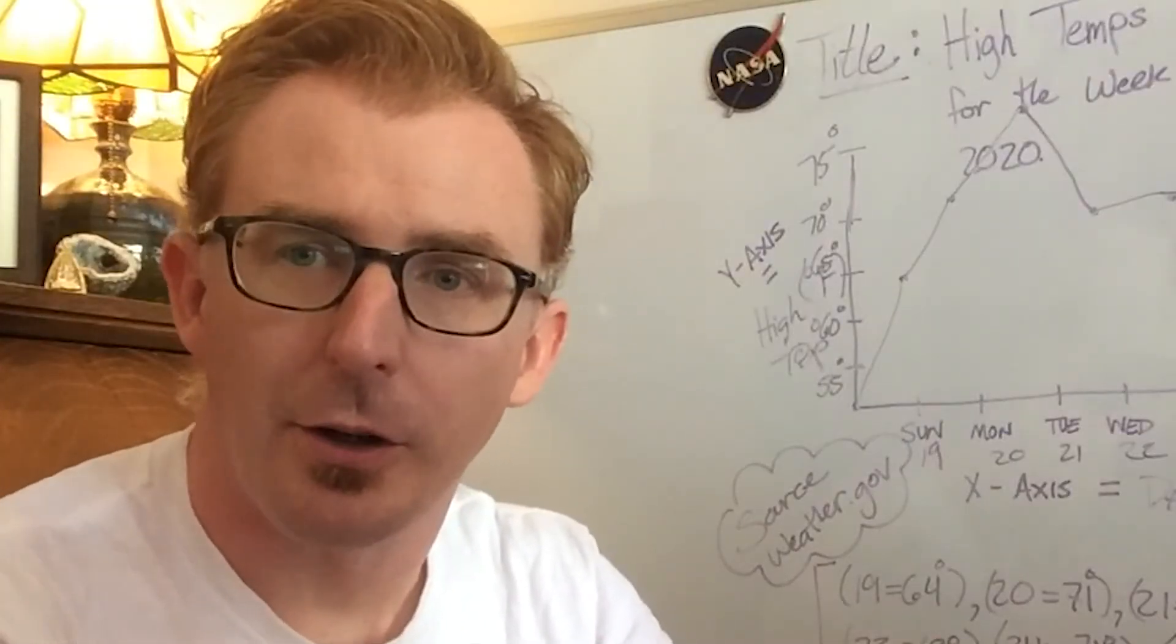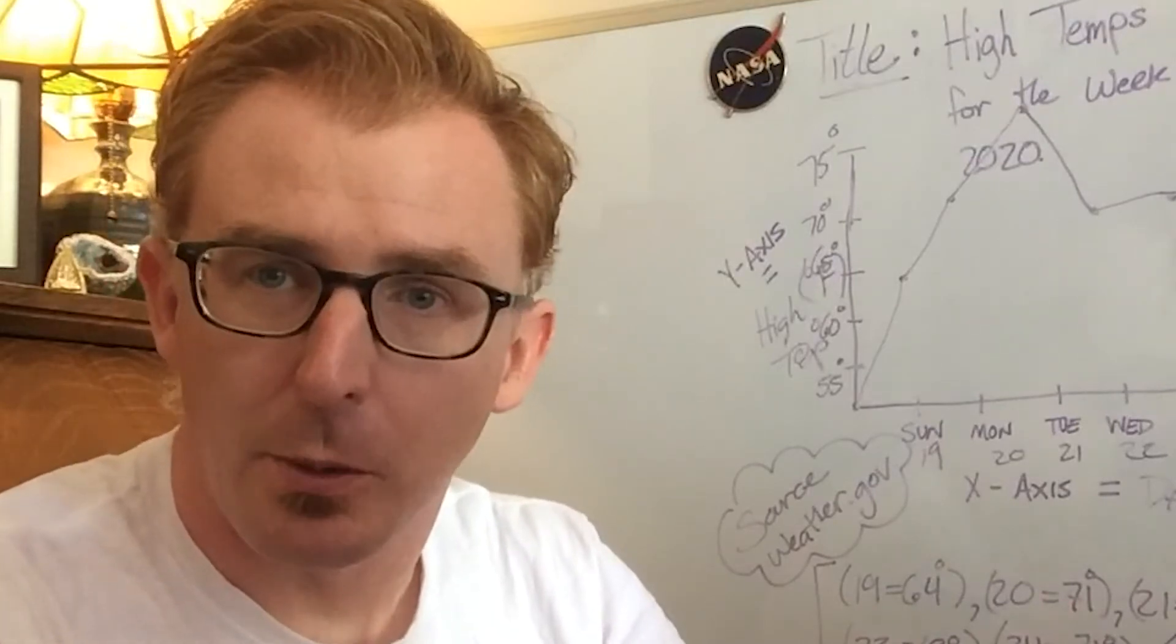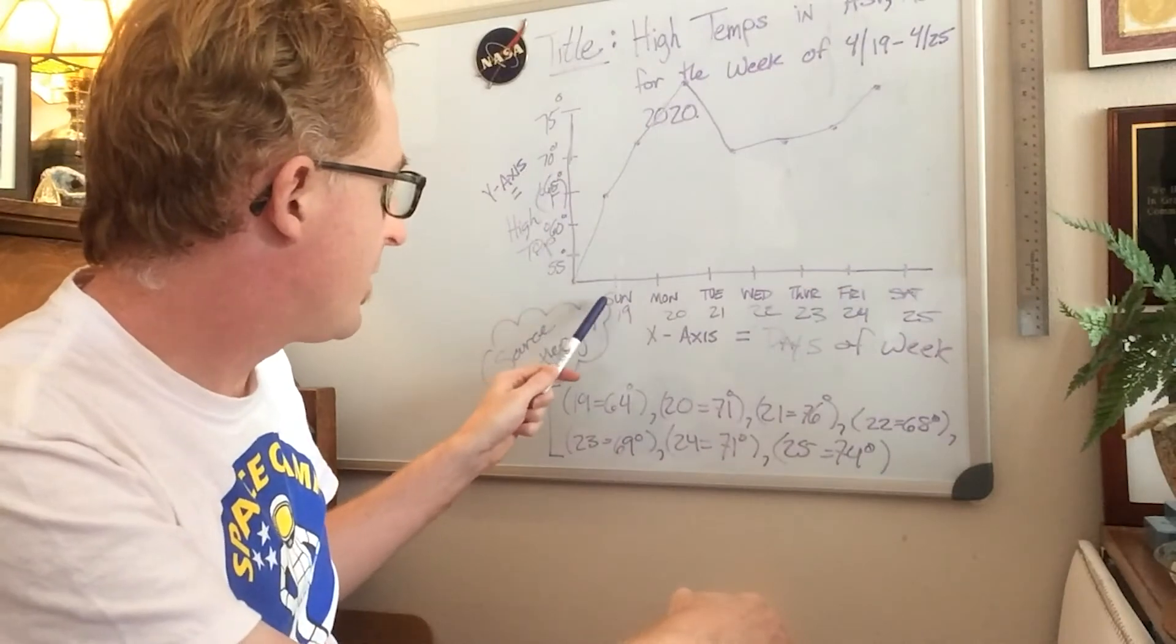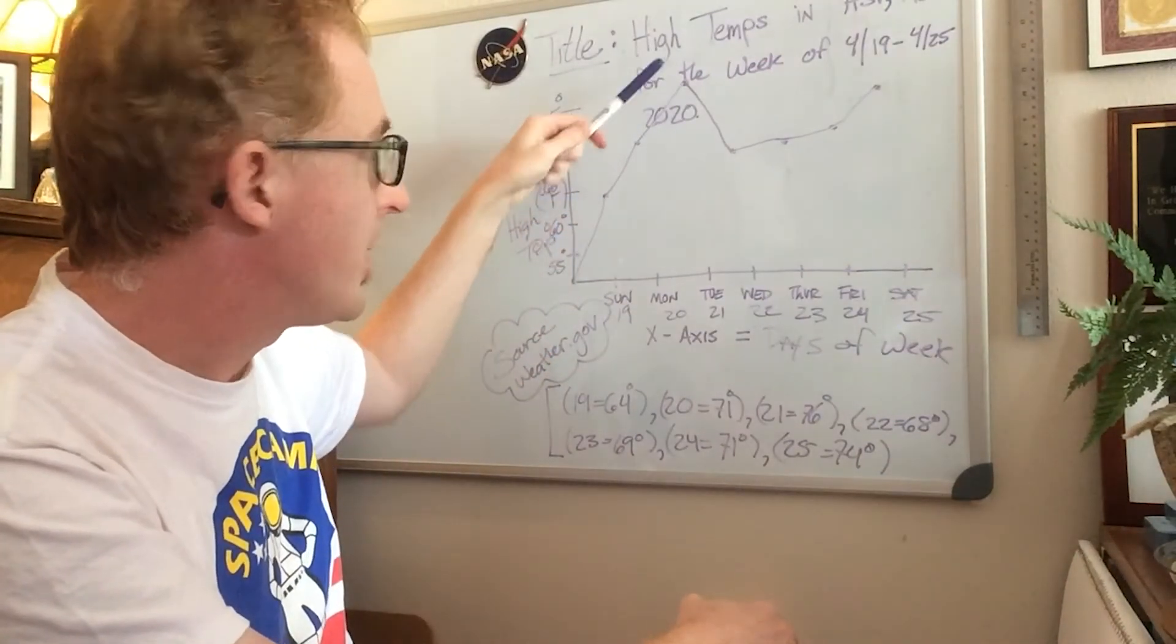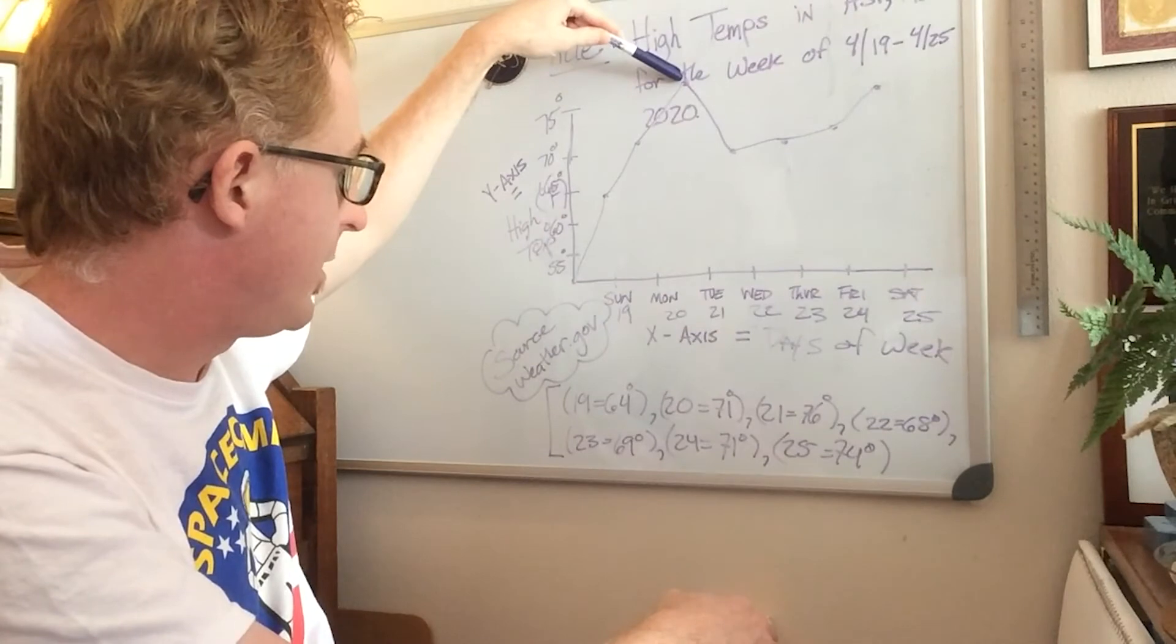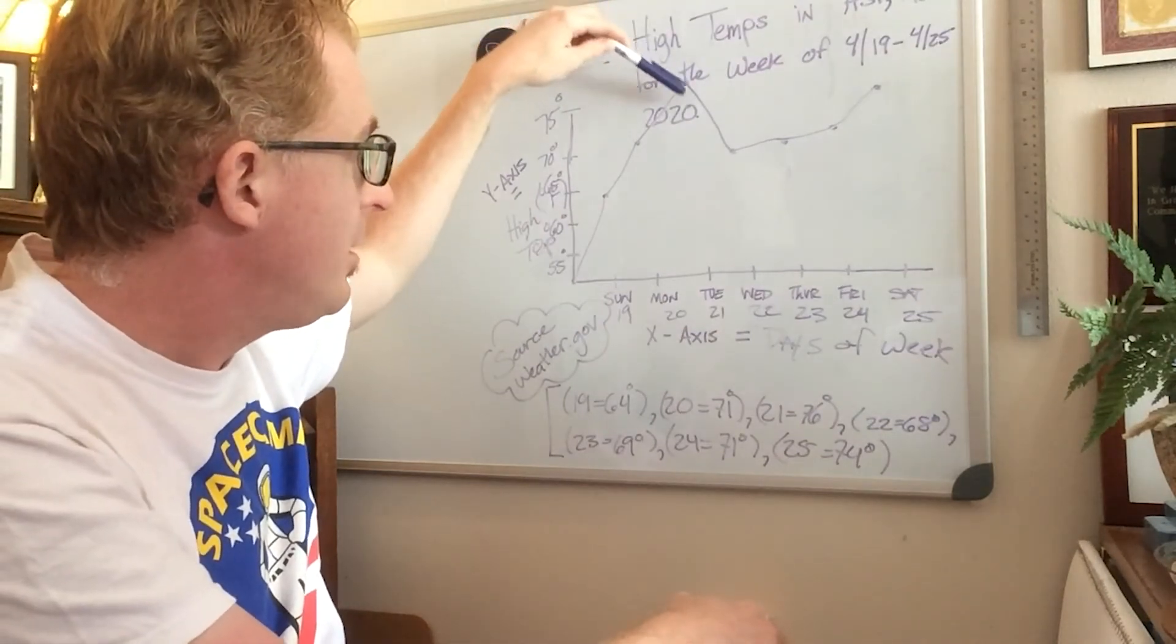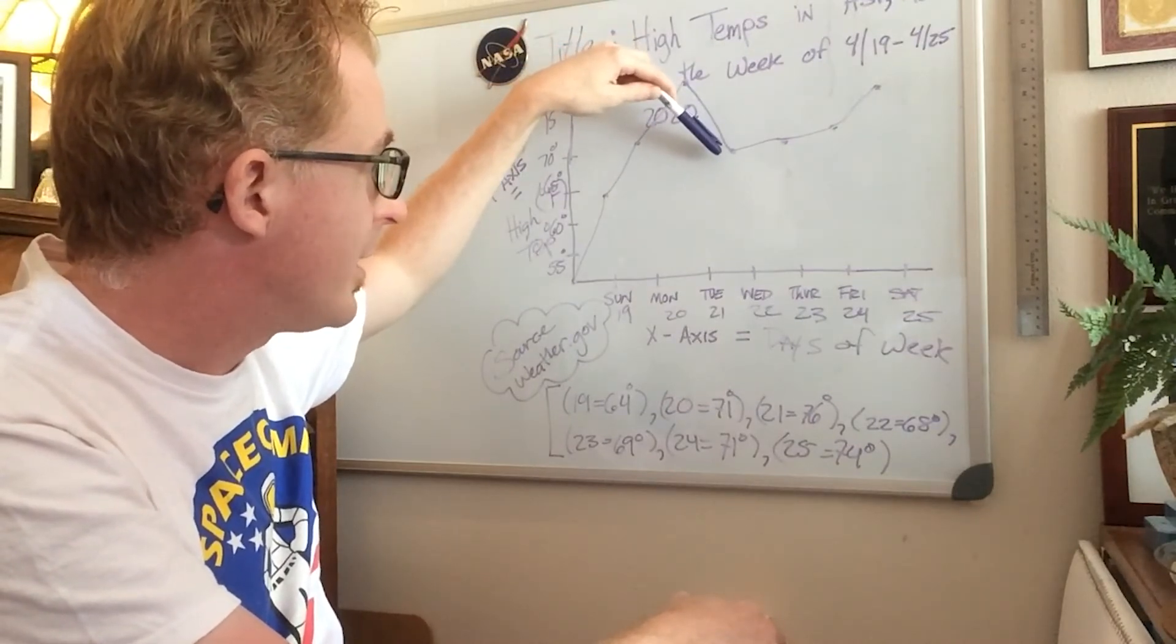Now that we've plotted our data points on our line graph, let's review those data points as it's being picture represented. It seems at the very beginning of the week, to the midweek we had a sharp increase climb in temperature, reaching with a max temperature of 76 degrees.